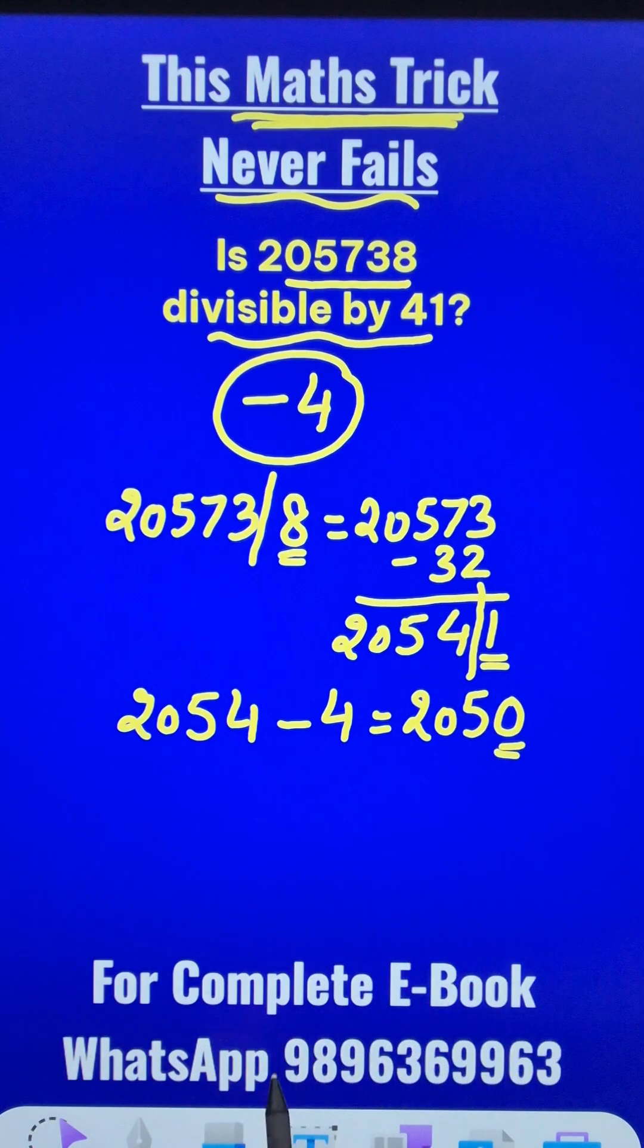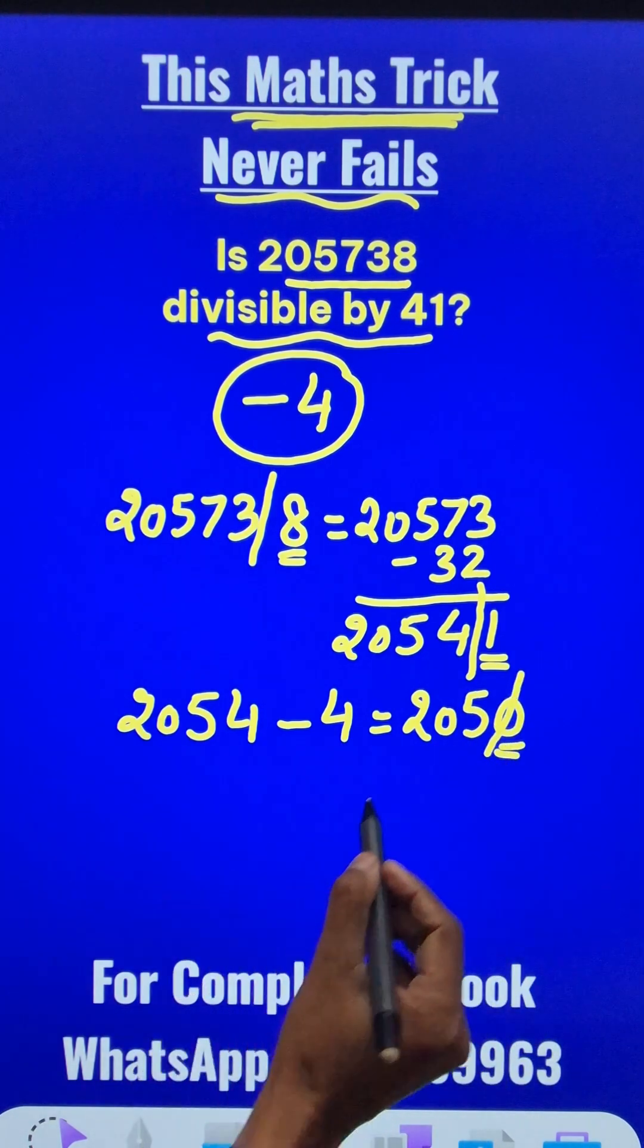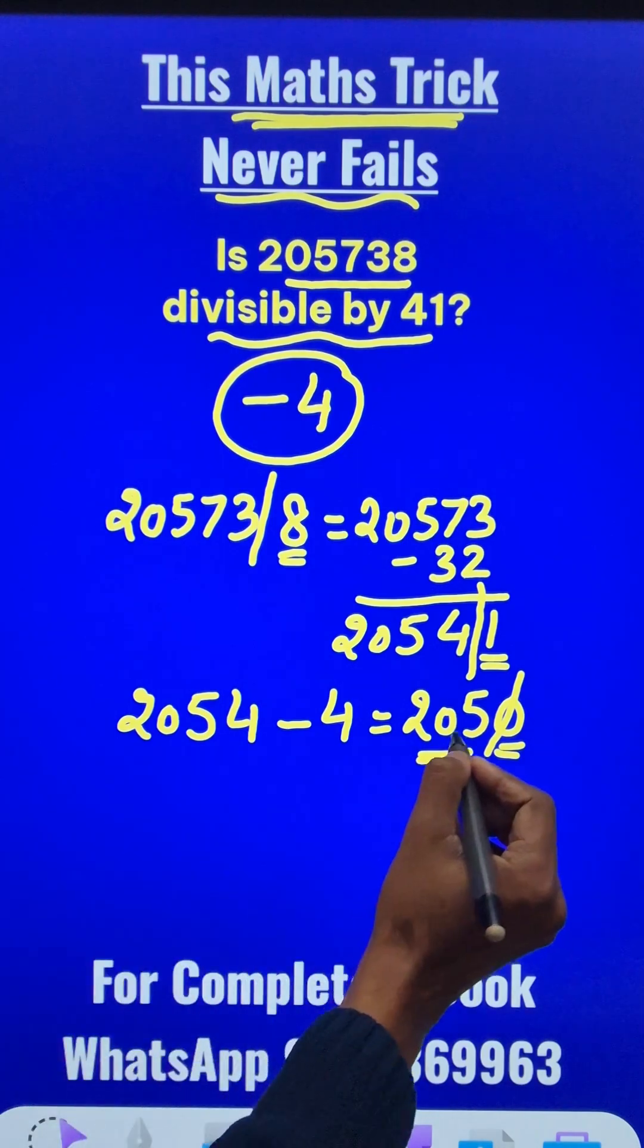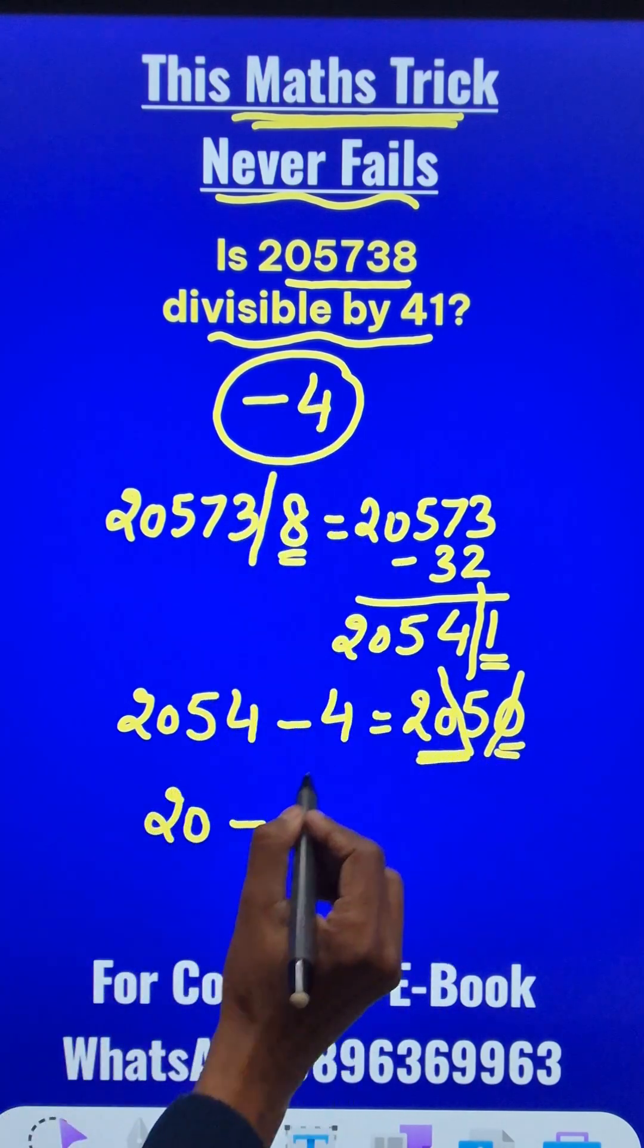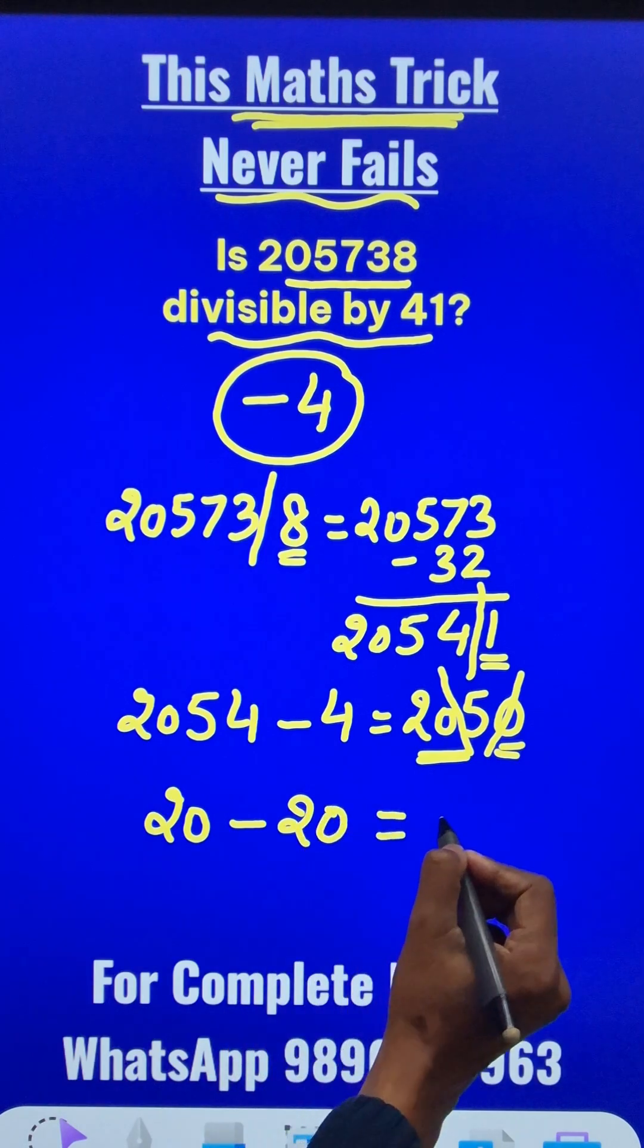Fortunately for me, I get a 0 here in the unit place which I can eliminate. I have 205 now so I can do the same thing. Separate out the last digit 20 minus 4 times the last digit 5 is 20 and I get a 0.